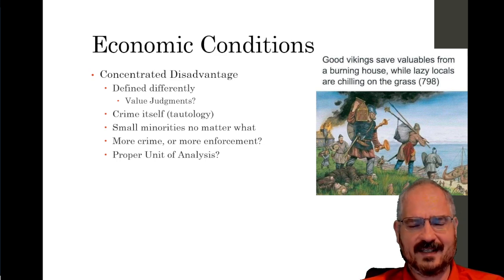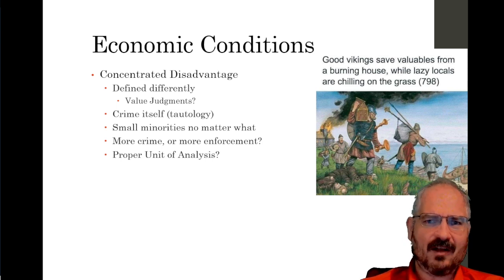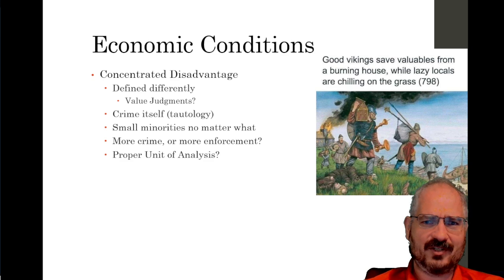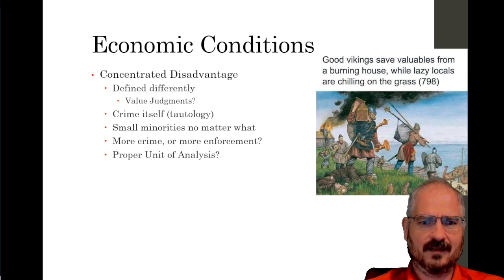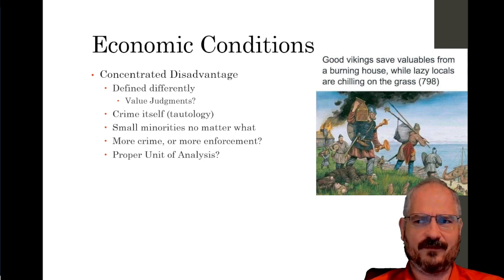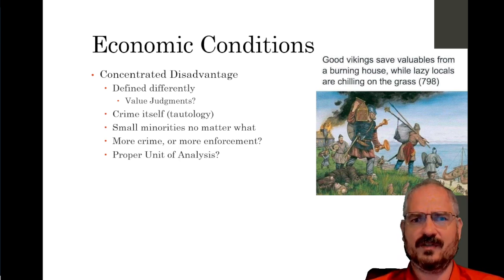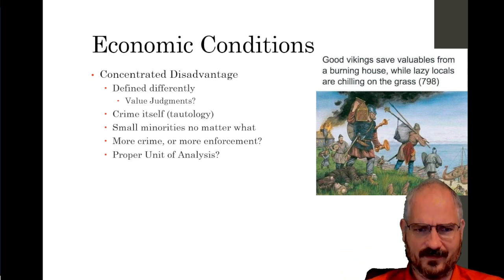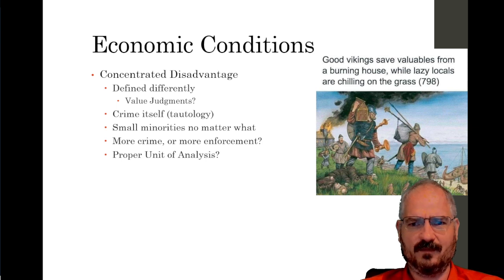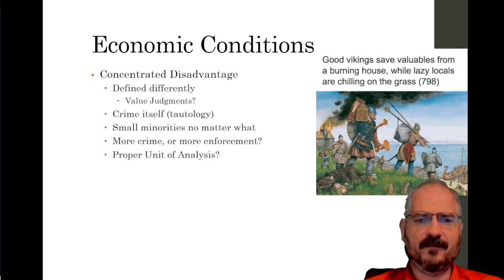Some measures of concentrated disadvantage actually use crime itself as part of the measure — does the area have a lot of crime? Then it has high concentrated disadvantage. Of course we're then going to find that high concentrated disadvantage correlates with high crime. That's a tautology — it's circular. We're using crime to measure concentrated disadvantage and then finding it's correlated with crime. That's self-fulfilling.